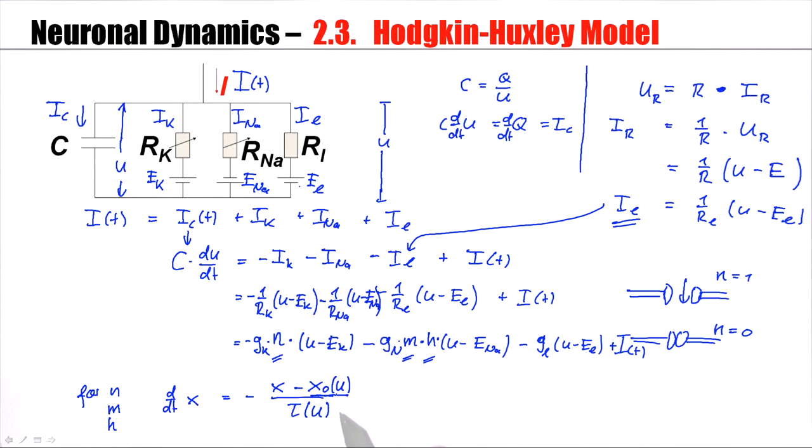This linear equation described the behavior nicely except that some of the delayed activations were not correctly described. And therefore, Hodgkin and Huxley proposed to use the equation for N. dN/dt = (N - N0(U)) / tau, and put N to the power of 4.